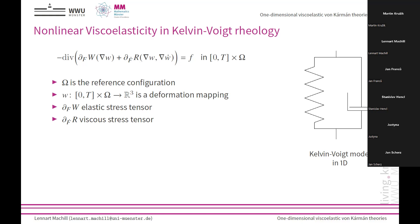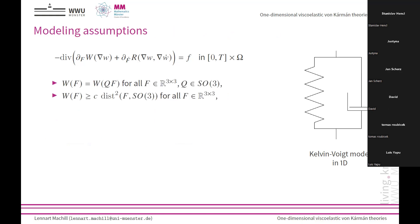We have two stress tensors in this equation. The first is the elastic stress tensor that depends only on the deformation gradient. The second stress tensor additionally depends on the time derivative — it depends on the strain rate. Many examples can be modeled with this. My favorite example is the spine: the human is taller in the morning than in the evening, only by small millimeters, because gravitation acts on the spine vertically during the day, and in the night the spine recovers. This is a slow process and is an example of this viscoelastic material.